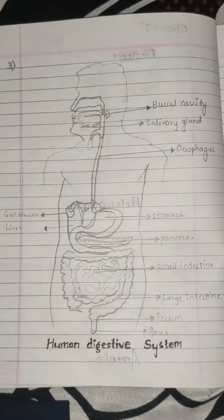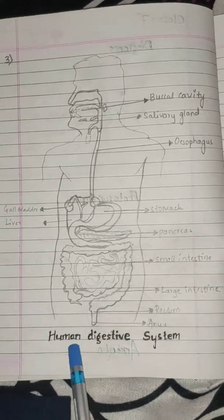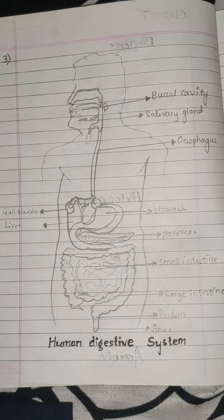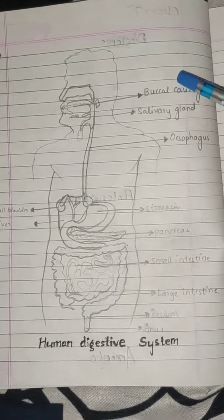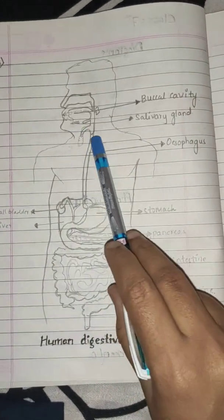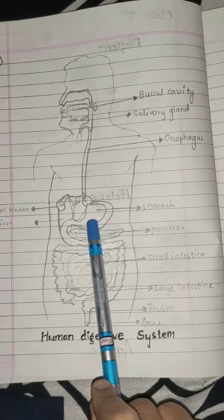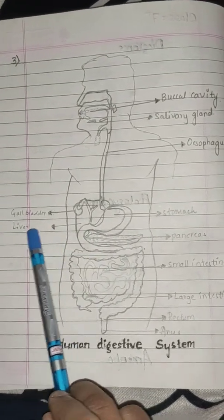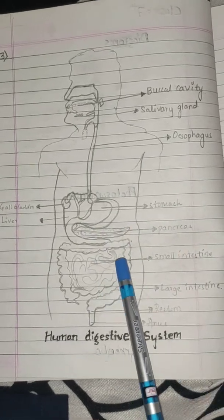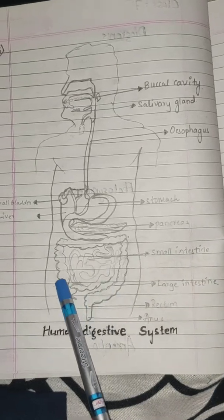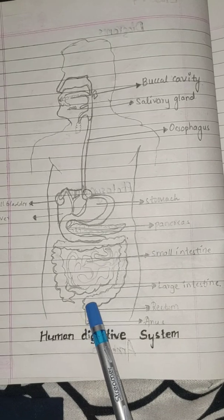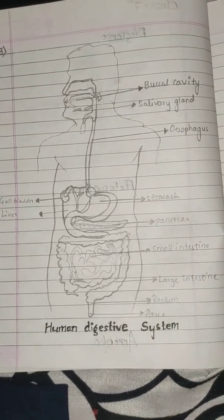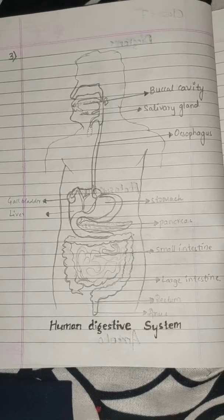Now we come to the next diagram: the human digestive system, which is very important. Starting from the top: this is the buccal cavity, this is the salivary gland, the esophagus — also known as the food pipe — the stomach, this pouch-like or sac-like structure is the gallbladder, this is the liver, this one is the pancreas, then the small intestine, the large intestine, the rectum, and this end part is called the anus.